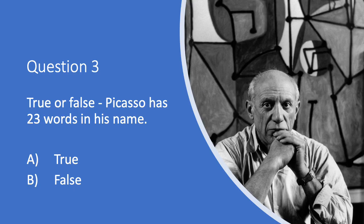Question three is a true or false question. True or false: Picasso has 23 words in his name. Is that A. True or B. False?